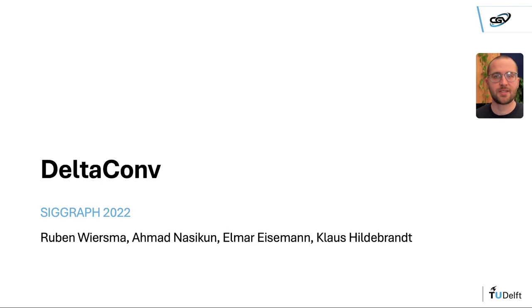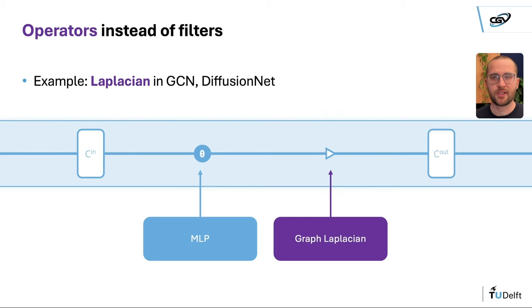With delta-conv, we tackle the same problem from a different perspective. Instead of shifting filter kernels over the surface, we apply operators from vector calculus. An example is the Laplacian used in prior work. This operator is coordinate independent, but it doesn't use directional information.